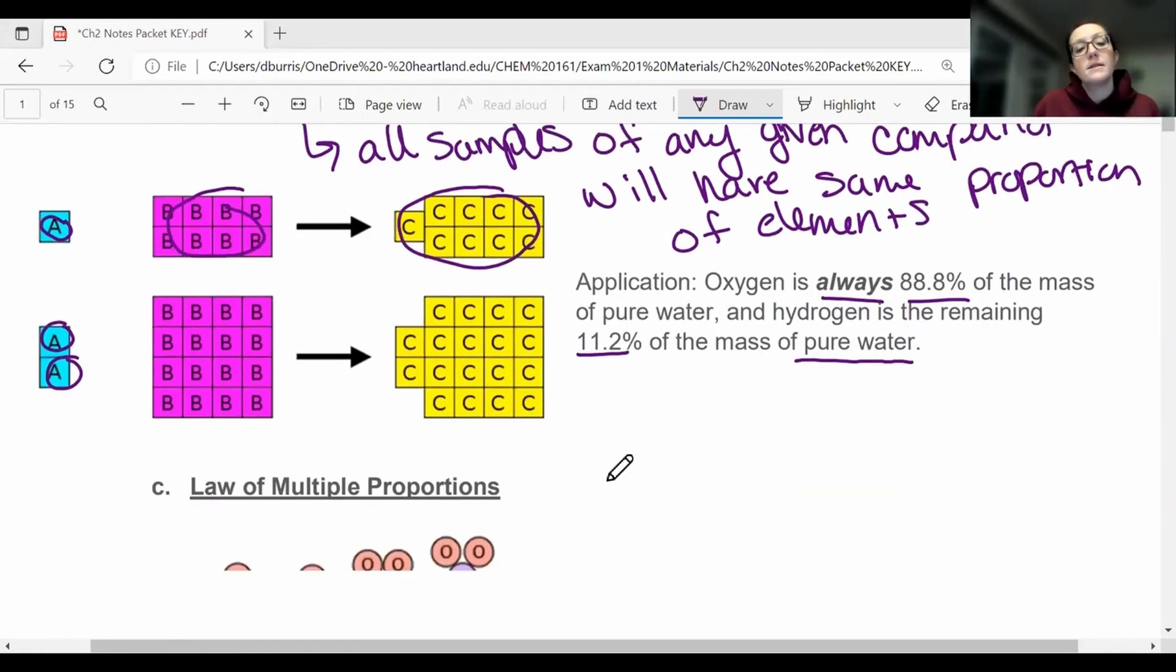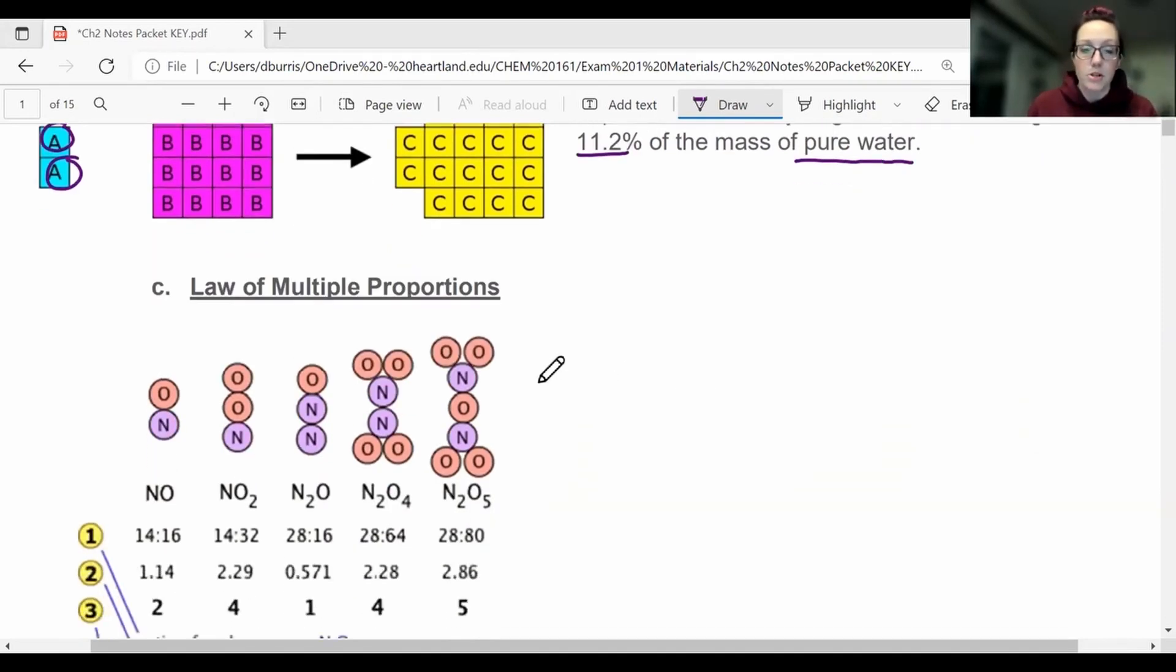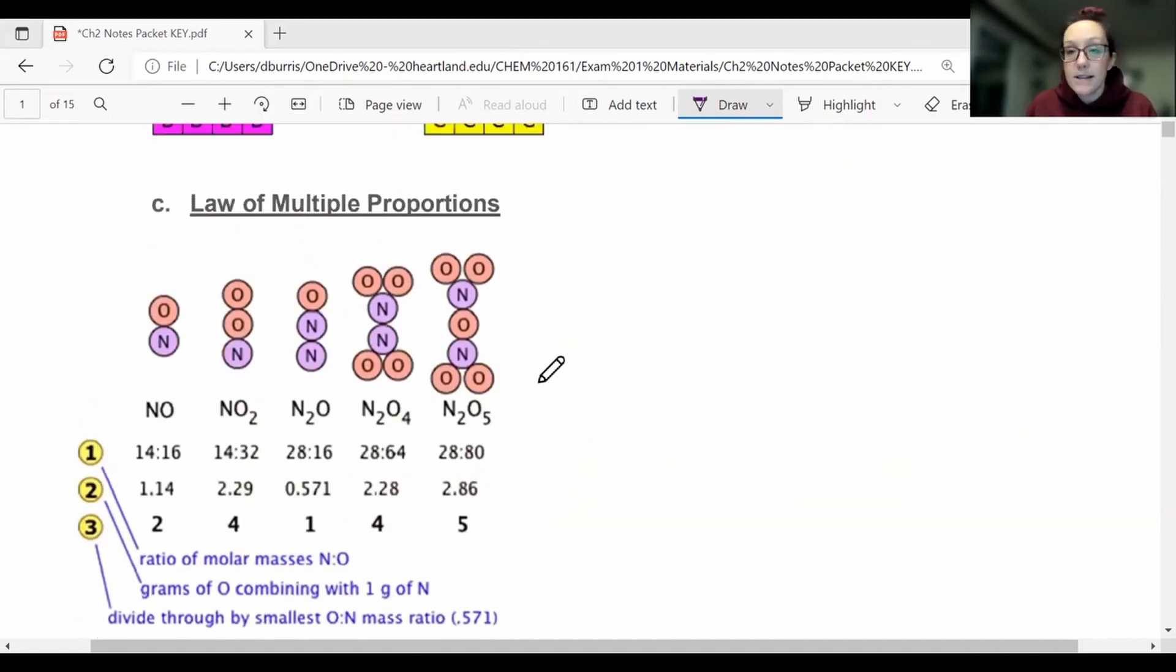Okay, so the other law is the law of multiple proportions. And if you kind of think about what the name of the law means, this means that there can be different or multiple proportions. Okay, water is H2O, but you can have a different proportion of hydrogen to oxygen. You could do hydrogen peroxide, which is H2O2, which is a completely different formula. It has different percentages, but it is still a combination of hydrogen and oxygen. So this is the law of multiple proportions. Essentially, nitrogen and oxygen can combine to make all of these different types of molecules, NO, NO2, N2O, so they can combine in different ratios.